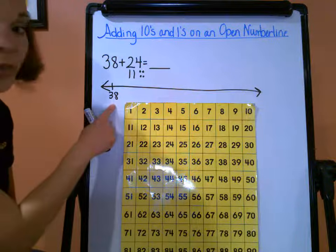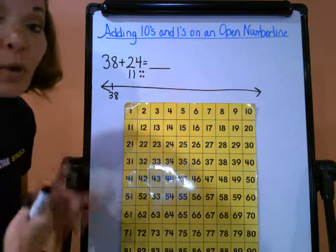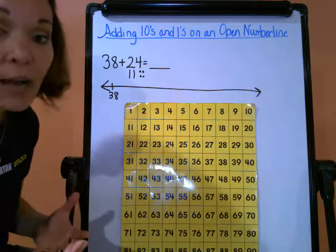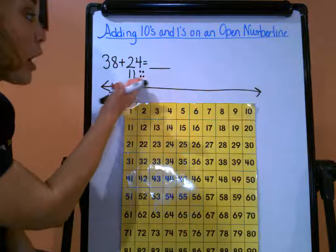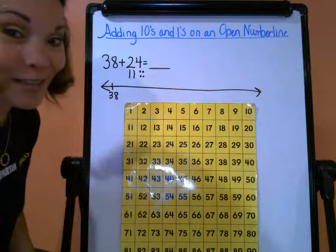So I'm going to start at 38, because remember when we started adding a while ago, counting on is a really great strategy, but when we're counting on using tens and ones, we're going to need some additional help.